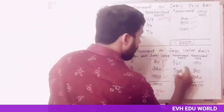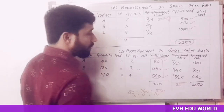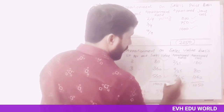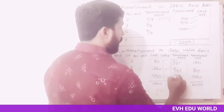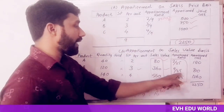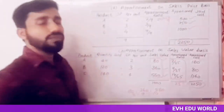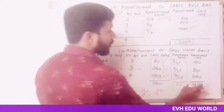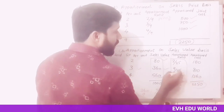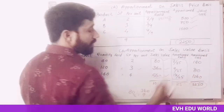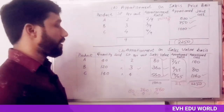Dividing through by 40: 2 divided by 2, giving 2 : 9 : 14, with a total of 25. The ratios become 2/25, 9/25, and 14/25. Apportioning Rs. 2,250: Rs. 2,250 × 2/25 = Rs. 180; Rs. 2,250 × 9/25 = Rs. 810; Rs. 2,250 × 14/25 = Rs. 1,260. That is the joint cost apportionment for this question.